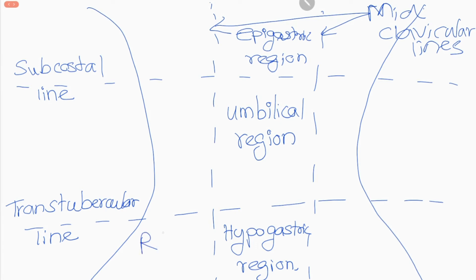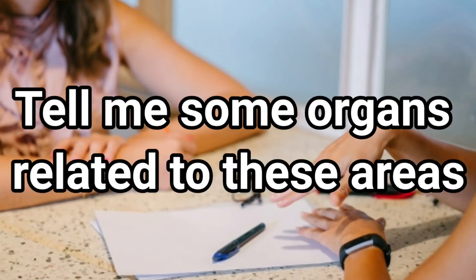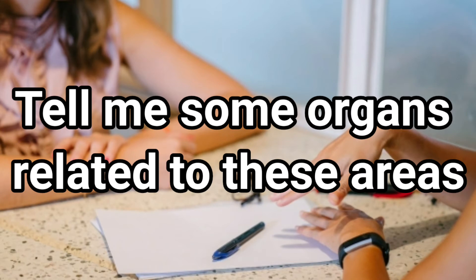This is the right iliac region. This is the left iliac region. Right hypochondriac region. This is the left hypochondriac region. This is the right lateral region. This is the left lateral region.